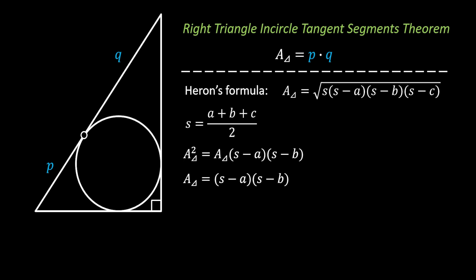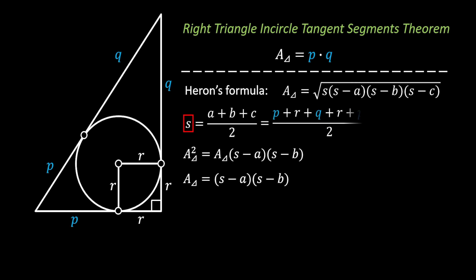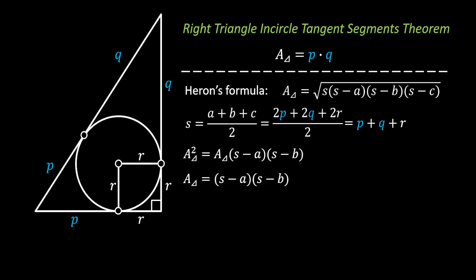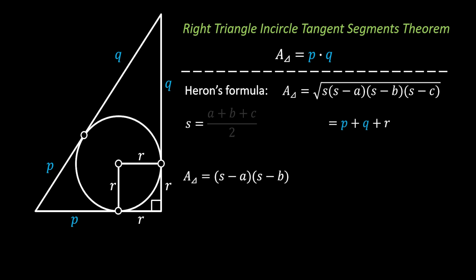Now let's look at our triangle once more. If we pull the radius horizontally and vertically, we know from our previous method that the bottom-right segments must also have the value of r. And from the first method, using the external point of a circle theorem, we know the remaining segments are p and q. Let's now look at the semiperimeter and substitute the values for a, b, and c in terms of our segments. We can simplify by grouping terms and cancelling 2 as a common factor, giving us that the semiperimeter equals p plus q plus r.